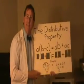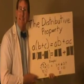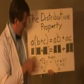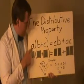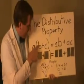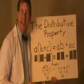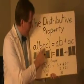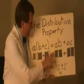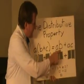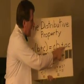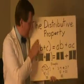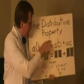For example, the distributive property. The distributive property says that A multiplied by the quantity — when we put it in parentheses we say 'the quantity' — A times the quantity B plus C, is equal to A times B plus A times C. In other words, we take the A and we distribute it to the B and to the C.